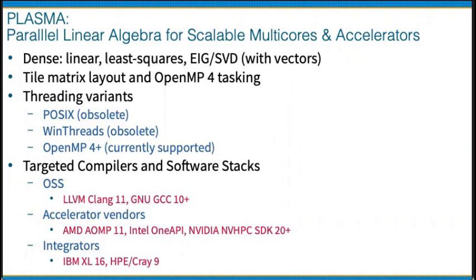Other threading variants previously supported in PLASMA included POSIX threads, which are now obsolete, and Windows threads, which are also obsolete. OpenMP tasks — including version 4 tasks without priorities and version 4.5 tasks with priorities — are currently the only supported mode in PLASMA. The compilers targeted include open source compilers such as LLVM and Clang starting with version 11 and GCC starting with version 10.